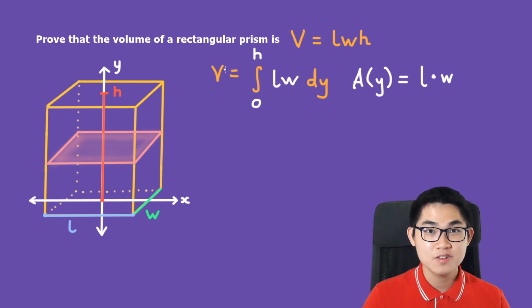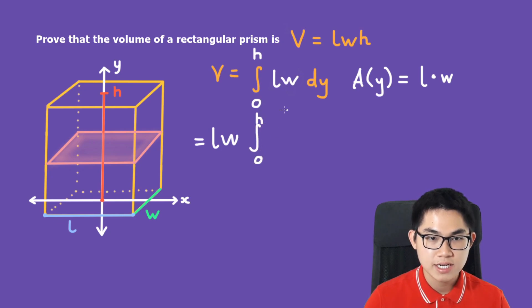The third and final step is to evaluate this integral. L and W are both constants because they always stay the same. They don't change throughout this shape. Because they are constants, we can move them outside of the integral. So we get L times W times the integral from 0 to H, and in here is going to be 1 dy.